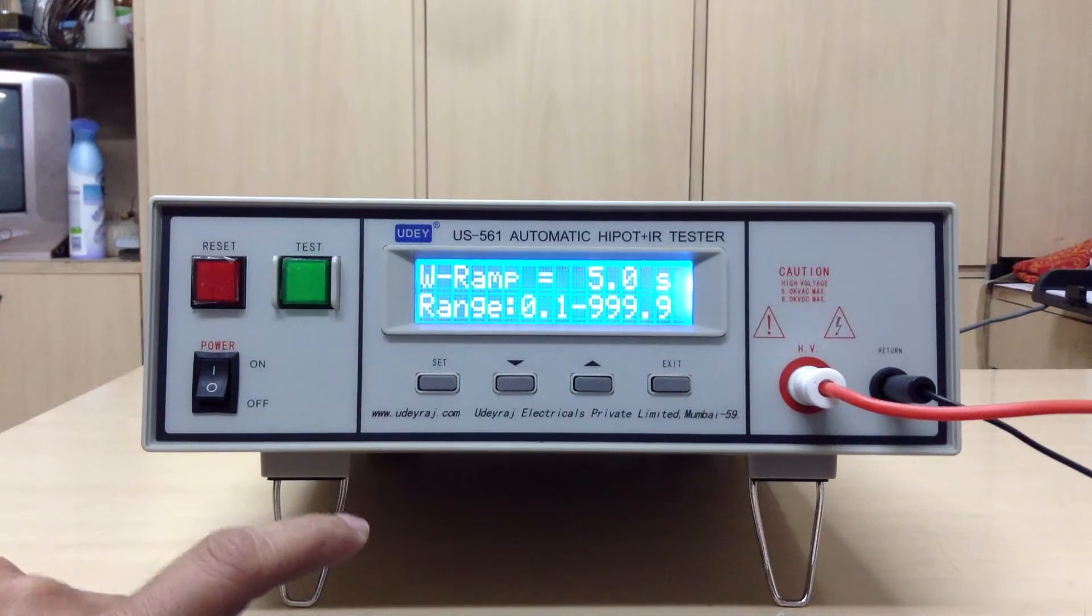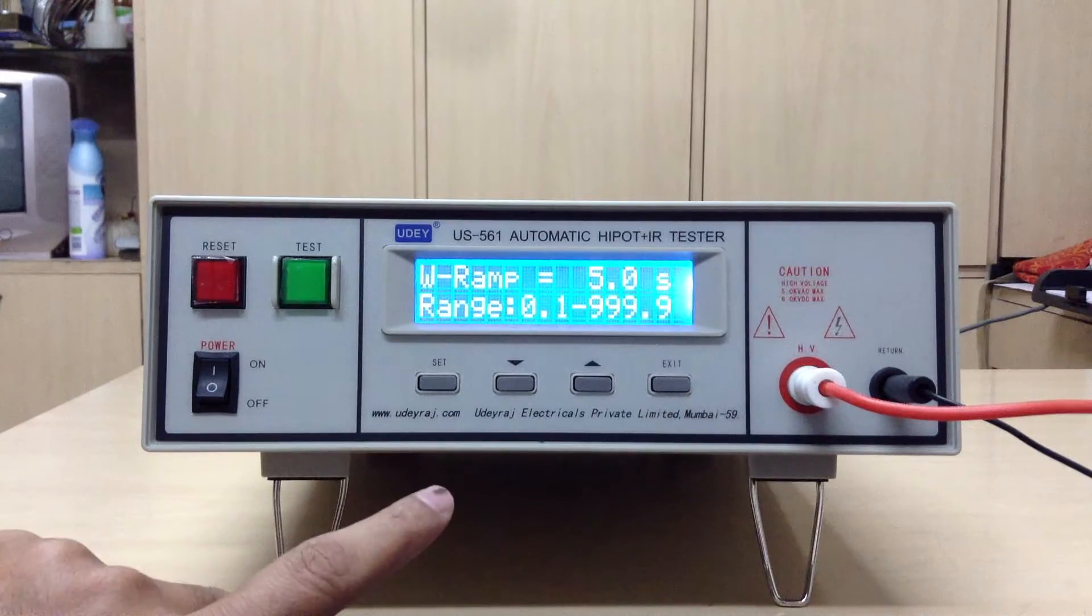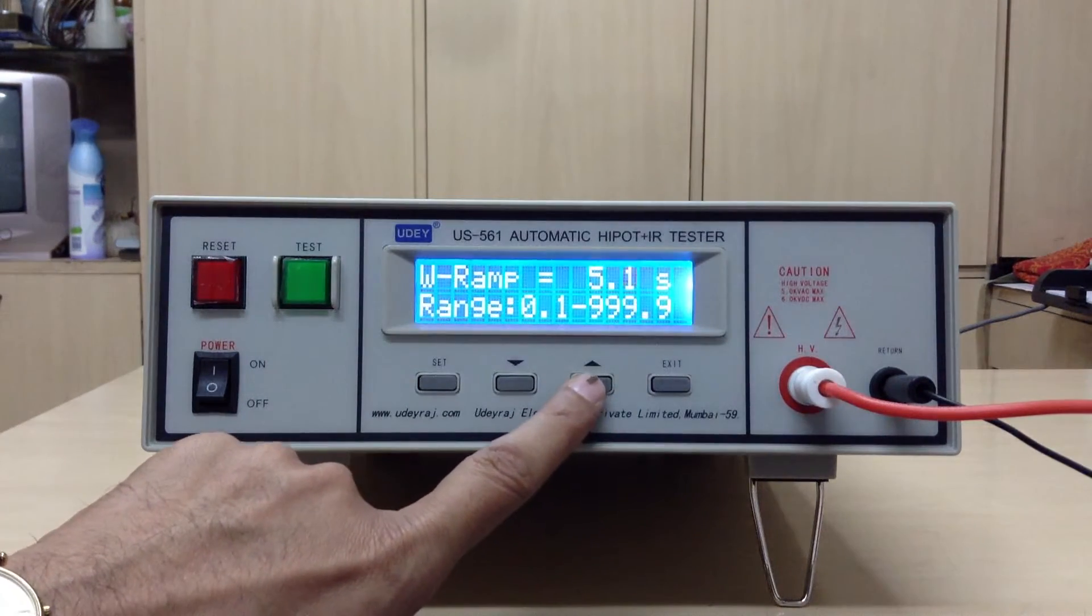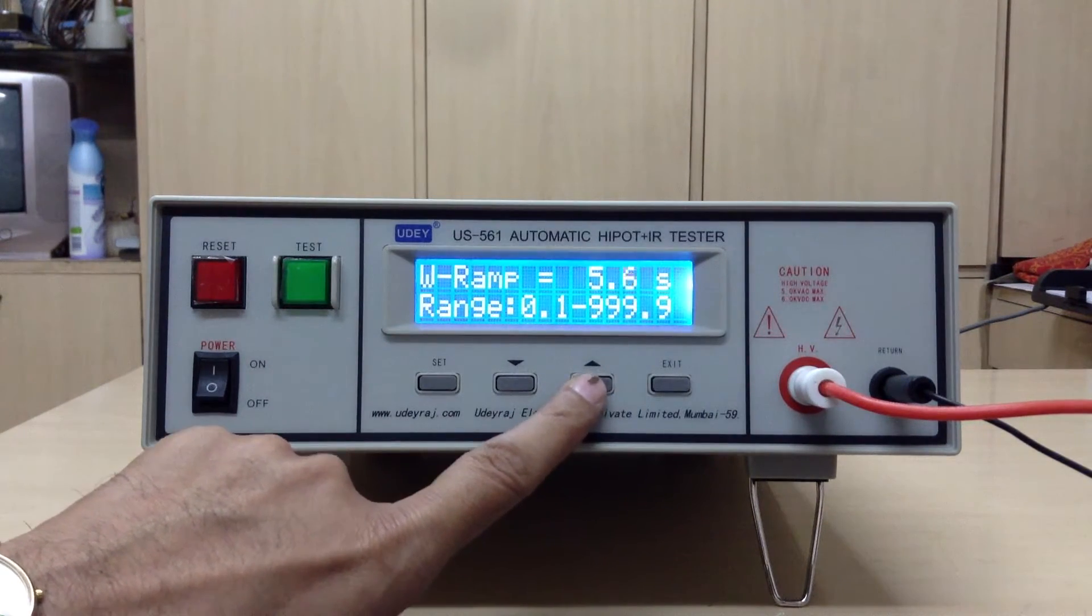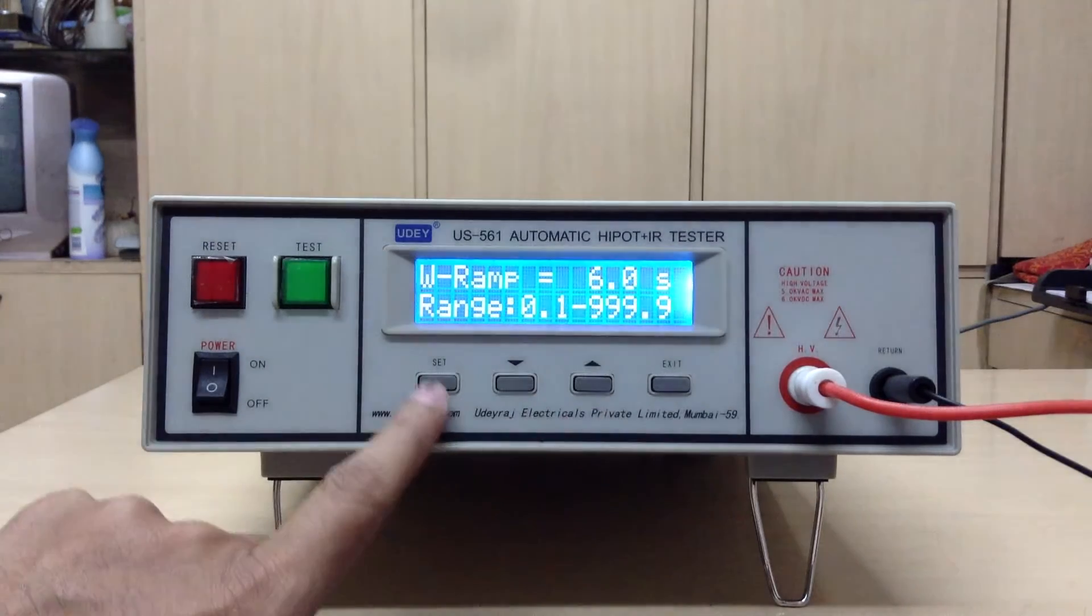For example, you want the KV rise to go in 5 seconds or 2 seconds or 10 seconds—you can select by the up and down key. In this case we select 6 seconds and then we go to dwell time.